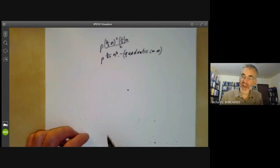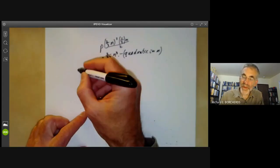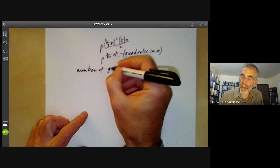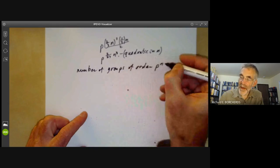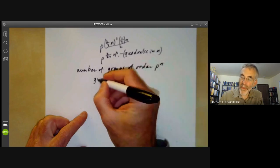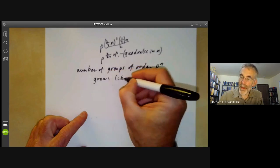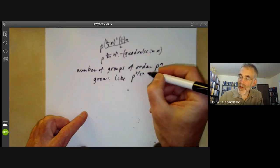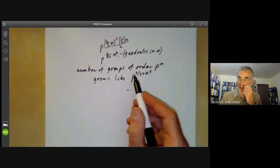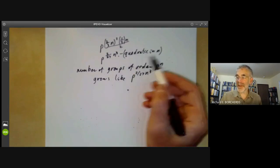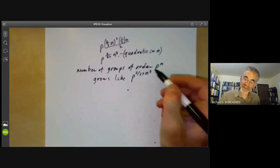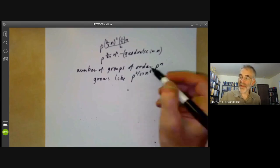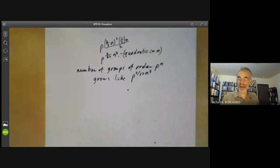Well, this quadratic term in n is maybe quite large for n small, but it's eventually going to be dominated by this. So what we see is the number of groups of order p to the n grows like p to the 2 over 27 n cubed. I don't mean it's asymptotic to this because this term here means it's actually less than that, but this is the sort of main term driving the growth, roughly this size.